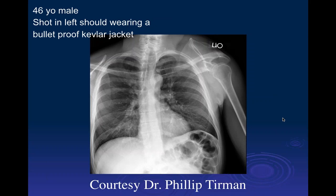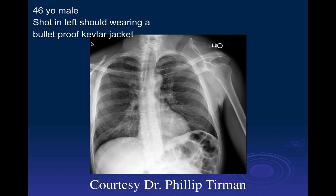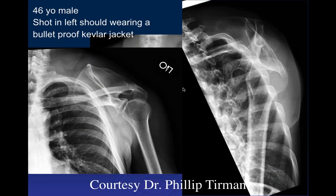Case presentation: 46-year-old male shot in the left shoulder while wearing a Kevlar jacket. On a frontal view of the chest, looking at the left scapula, it is displaced and significantly angulated — there is rotation. On the Y-view, the spine of the scapula appears abnormal, and it looks like the shoulder articulation of the humerus with the glenoid is otherwise stable.